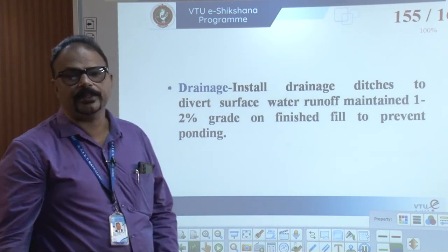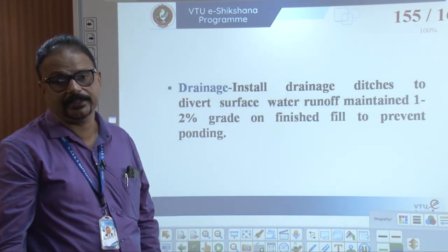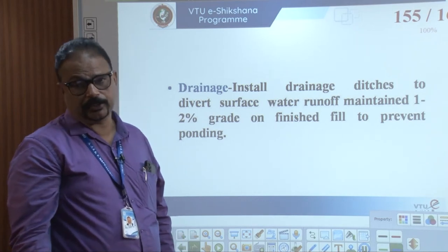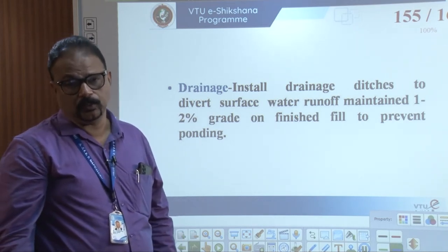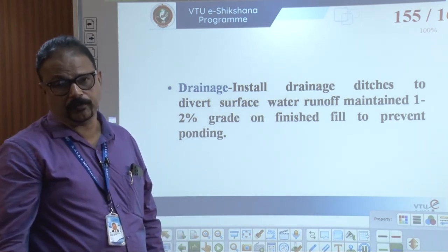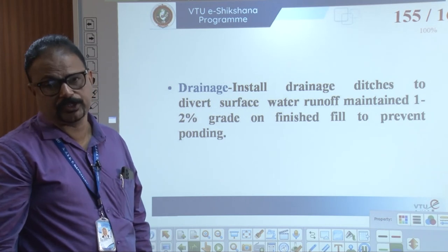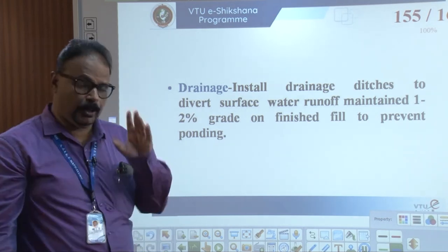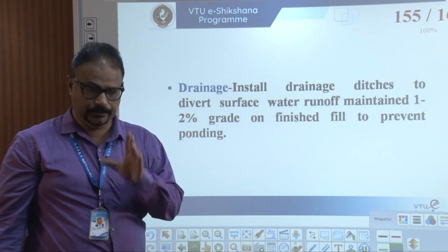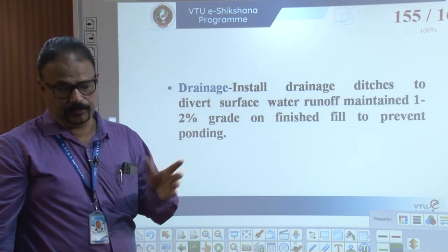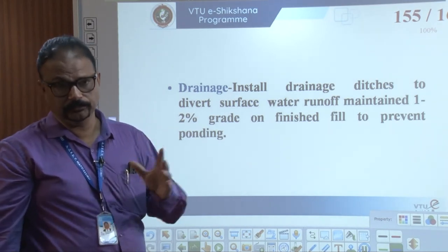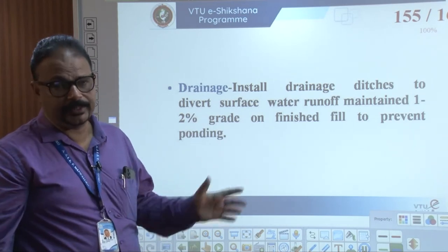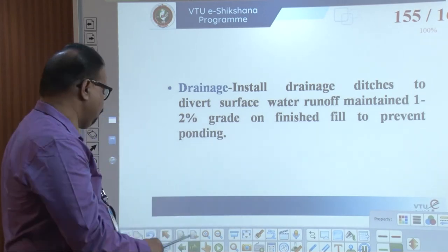Drainage system: drainage ditches divert surface runoff. A one to two percent grade of the finished fill is maintained to prevent ponding. A proper drainage system should be kept for the movement of leachate, connected to the pond — that is also a very important side.